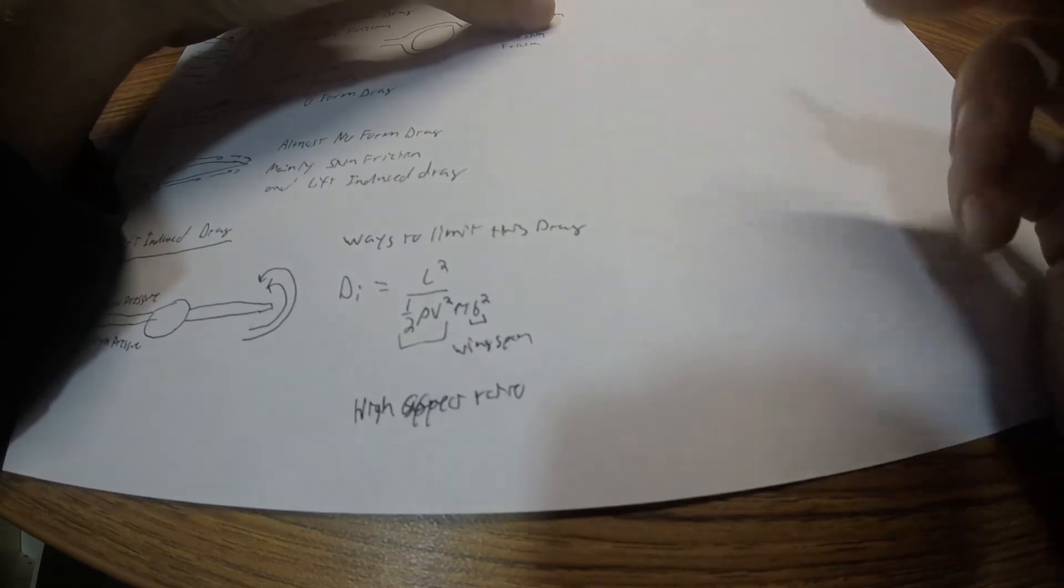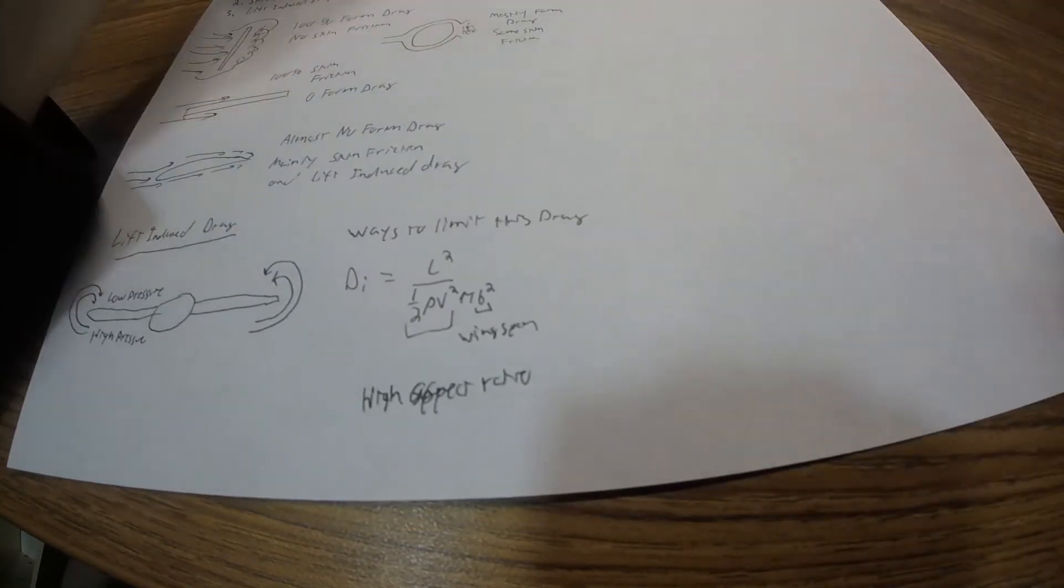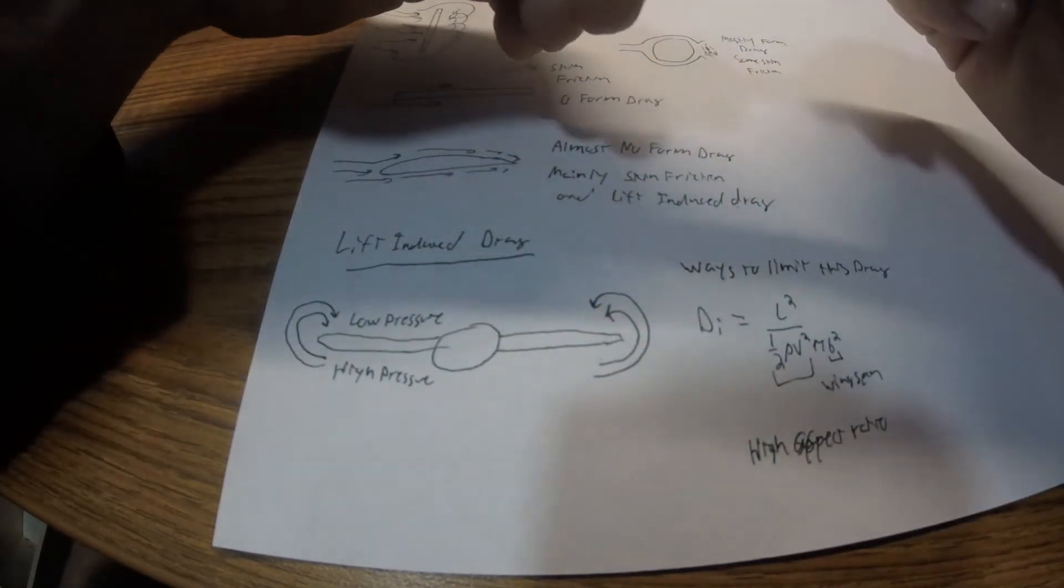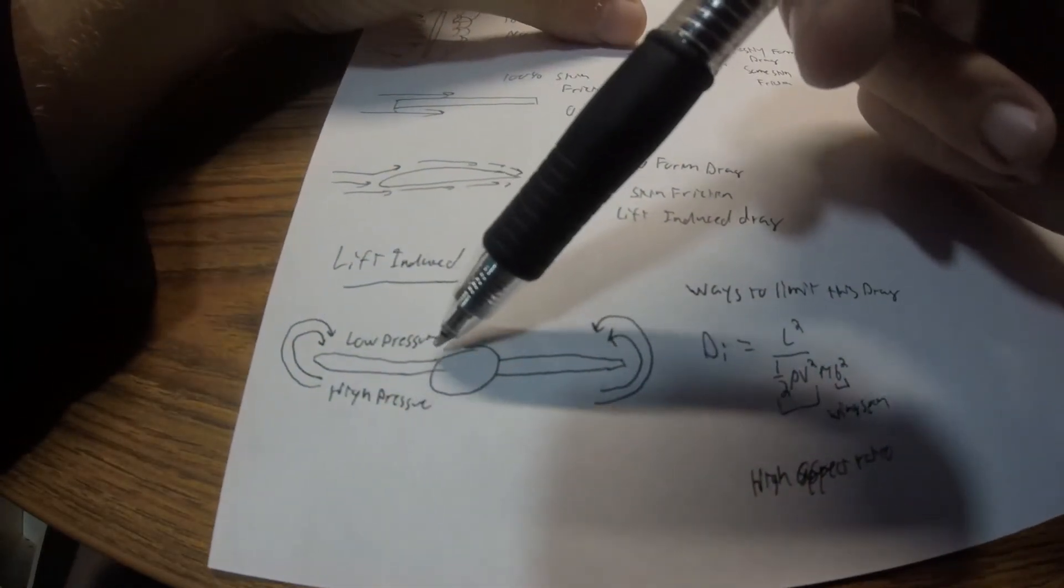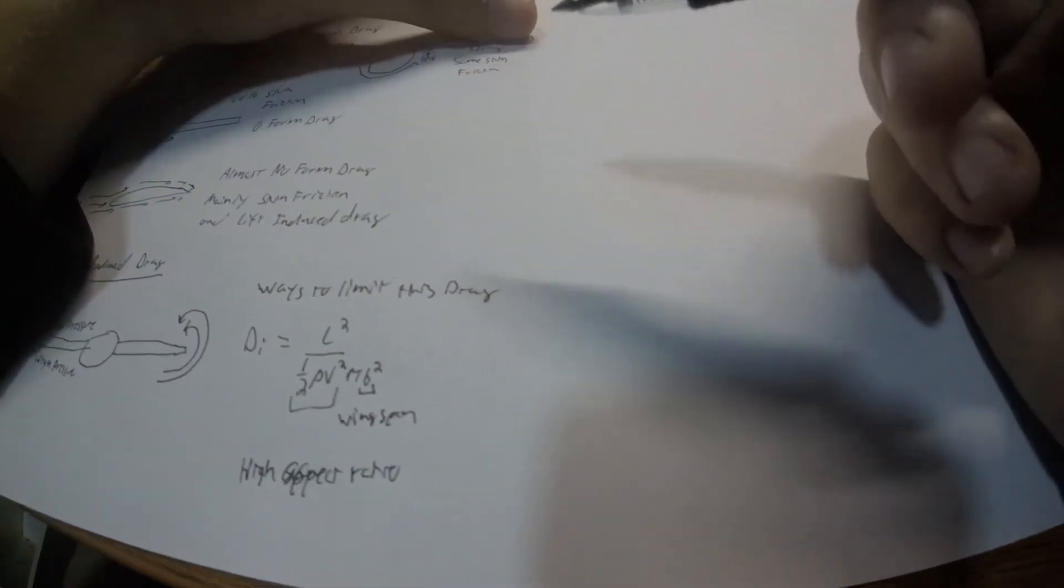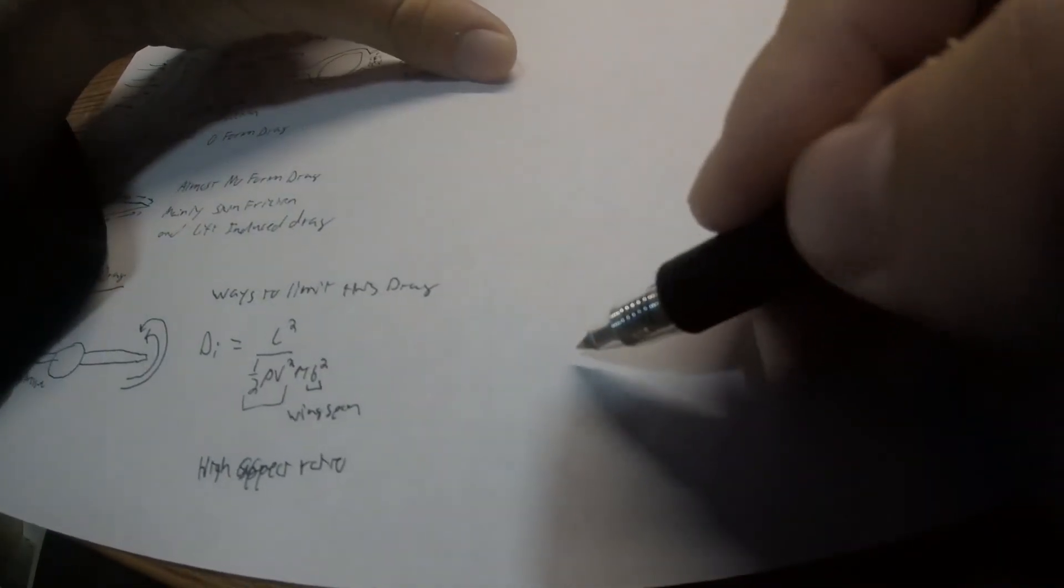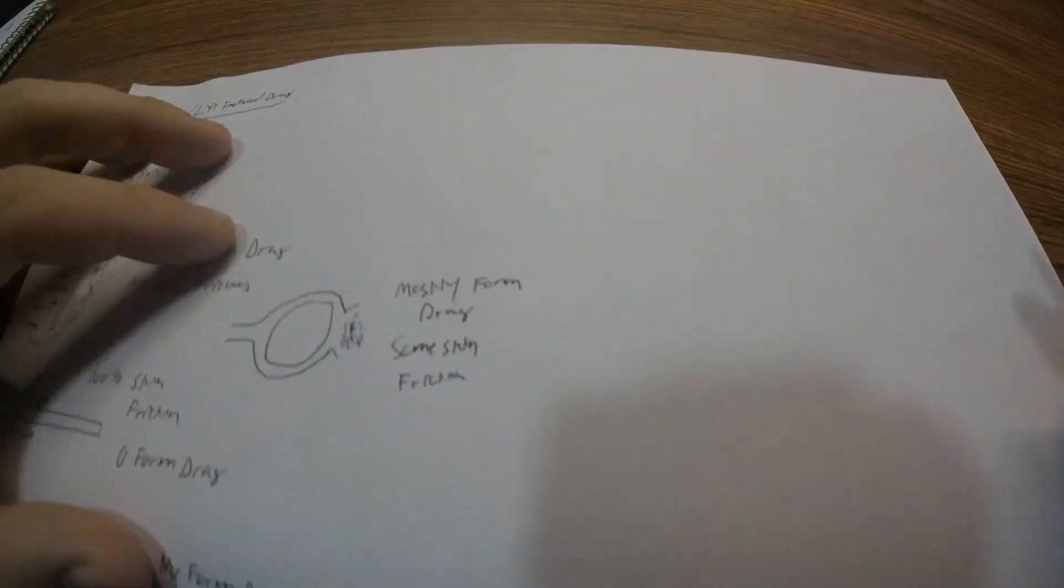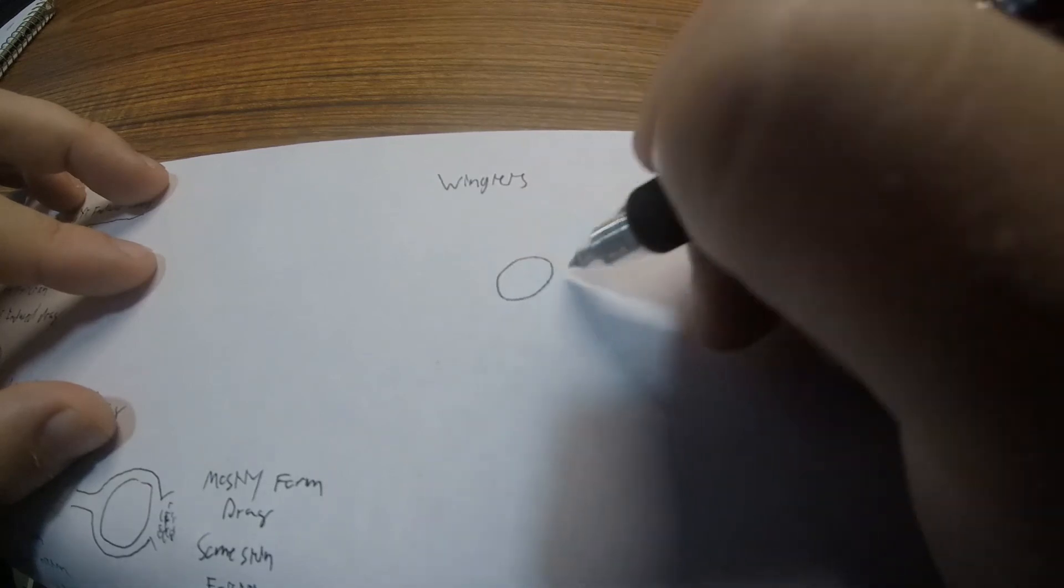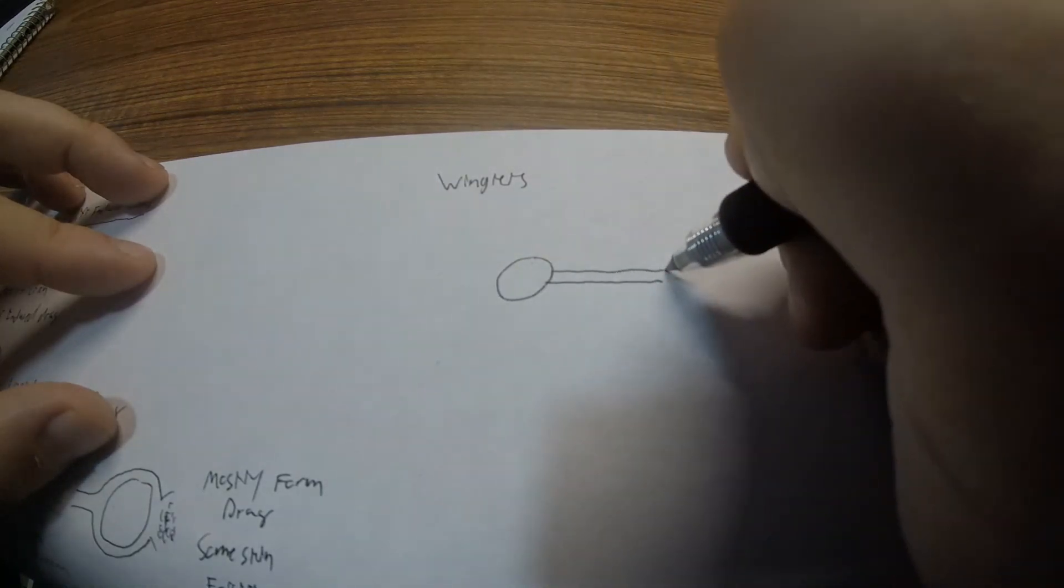But obviously there's limits on the amount, about the length of the wing. You can only get so long. There's other things to consider like the weight, structural rigidity of the wing, and things like that. So a way you can kind of get around this while having still a relatively short wing for other purposes like getting through airport gates and stuff like that, is to introduce this concept called wingtips or winglets. And those are the things you see on the side of a plane, on the side of the wings of the plane, kind of look like this.